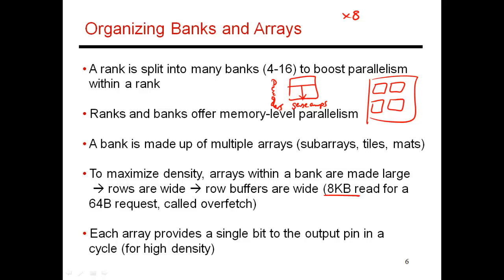Sometimes having a large row buffer is helpful, especially if your applications have high spatial locality. If there's high locality, you will be touching neighboring elements, which end up being row buffer hits. But on average, people have observed that a large row buffer containing 128 cache lines — such as an 8-kilobyte buffer that accommodates 128 different 64-byte cache lines — usually only yields about four row buffer hits before you move on to a different row in that same bank.